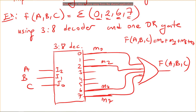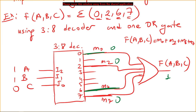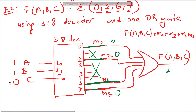For example, if a,b,c is one-one-zero, we select m6, so m6 is activated and its output is one, while the other inputs to the OR gate are zero — but the output is one because m6 is one. This is how a function is implemented using decoders. We only use the outputs where the function is one.